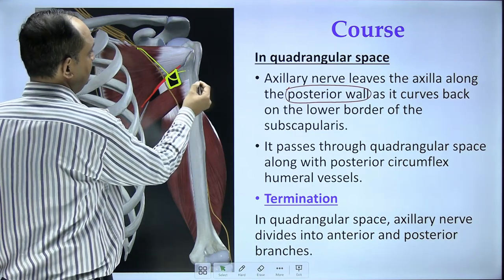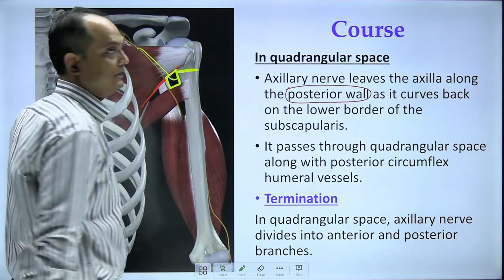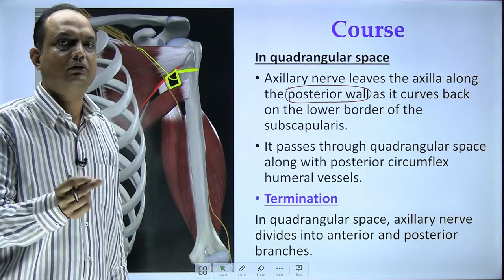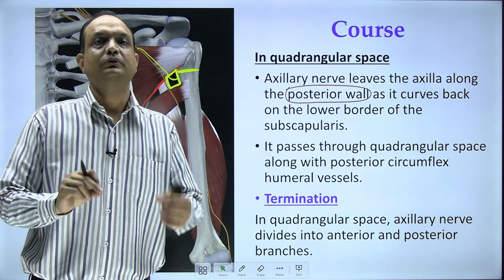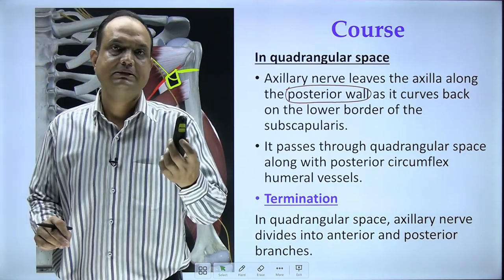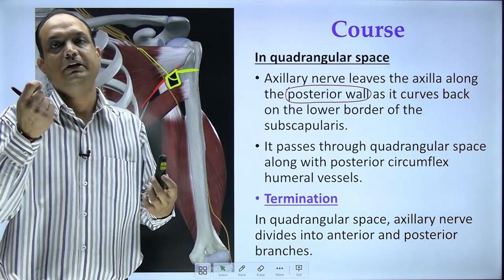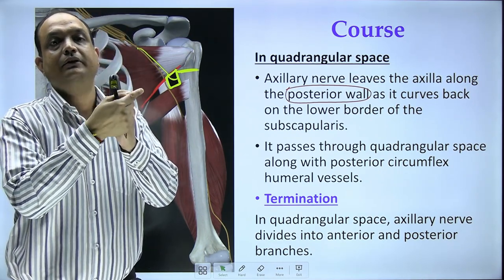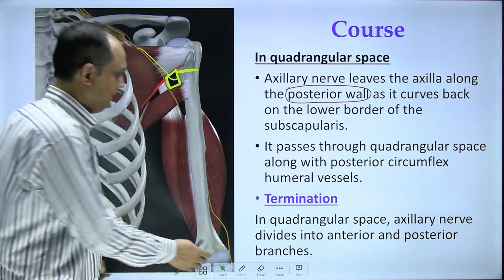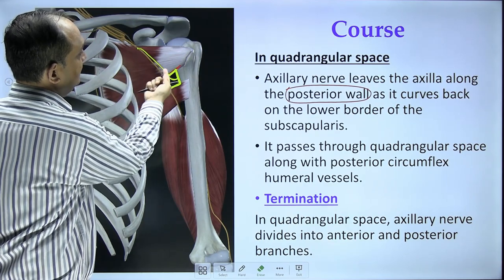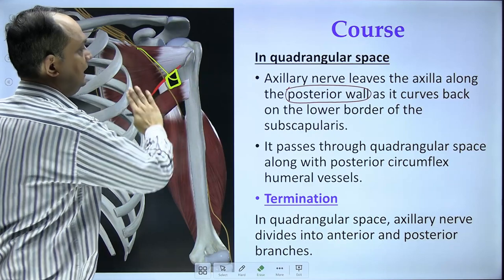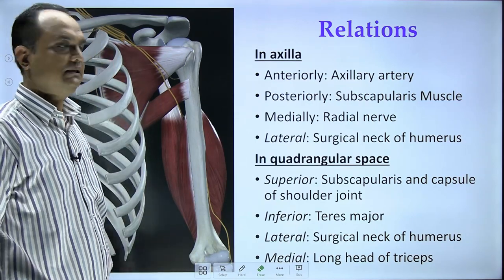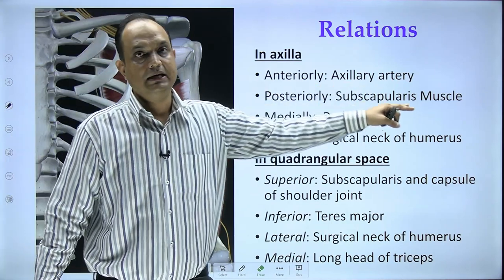After passing through the quadrangular space, the axillary nerve divides into two terminal branches: the anterior terminal branch and the posterior branch. An important point is that the axillary nerve never comes to the anterior aspect of the surgical neck of the humerus — it enters and loops on the posterior side only. So if asked to draw its relation with the surgical neck, always draw it on the posterior side.